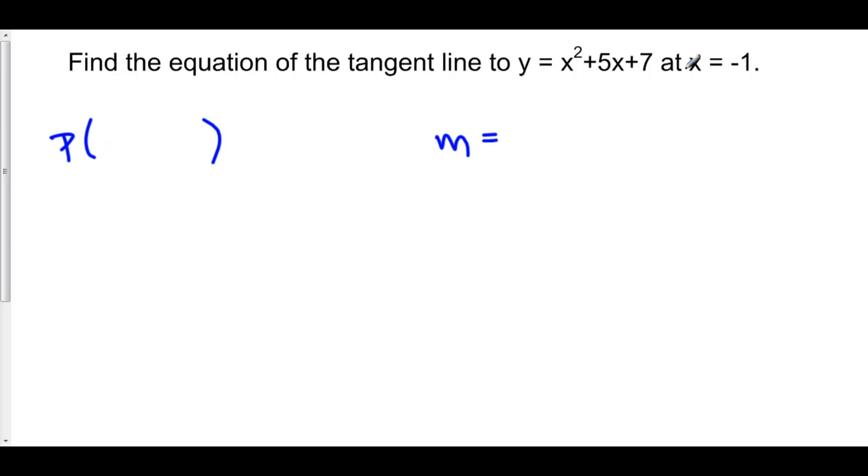To find the point, we know this happens at x equals negative 1, and we know that the tangent line actually touches our equation at x equals negative 1. So we know a point on our tangent line: x equals negative 1.